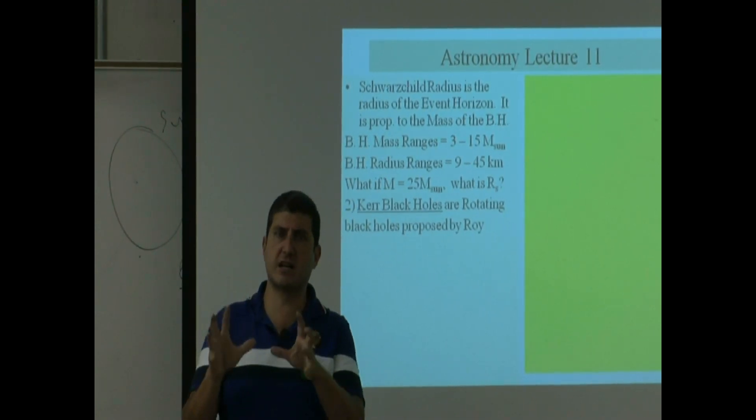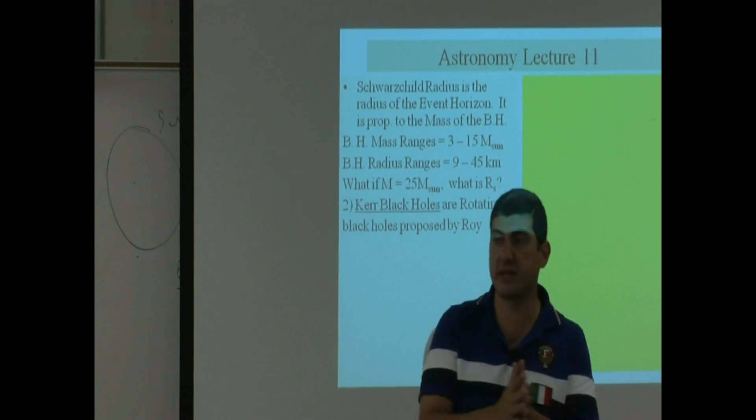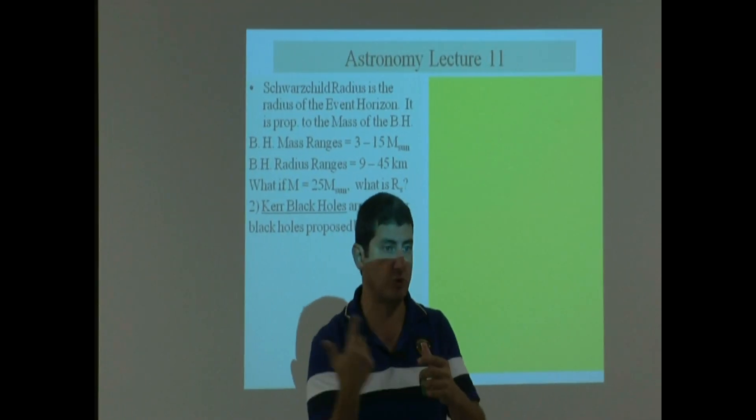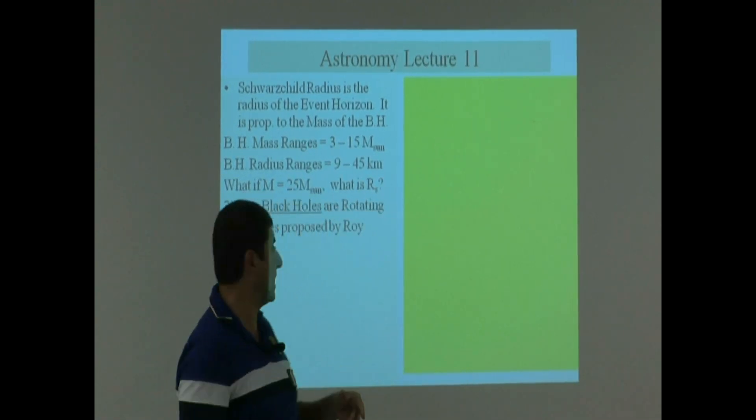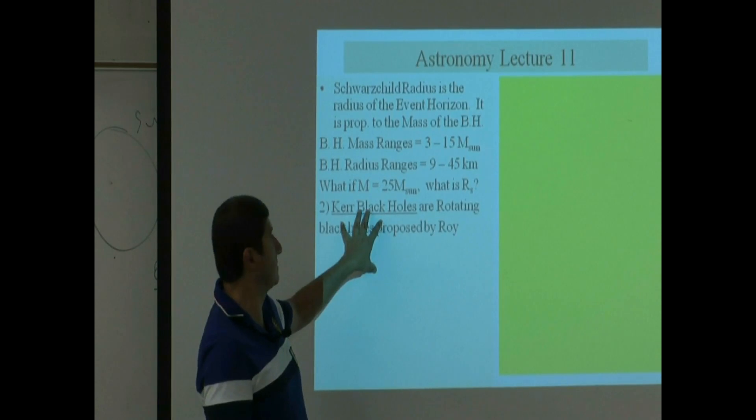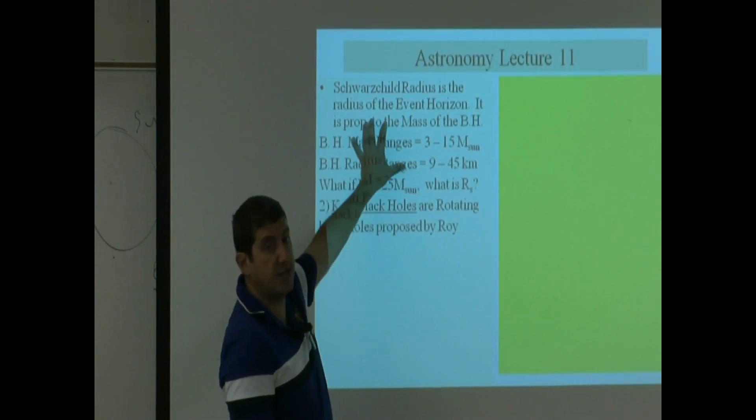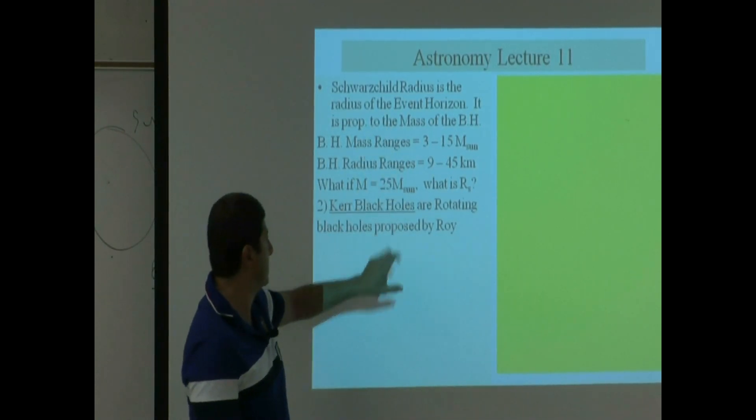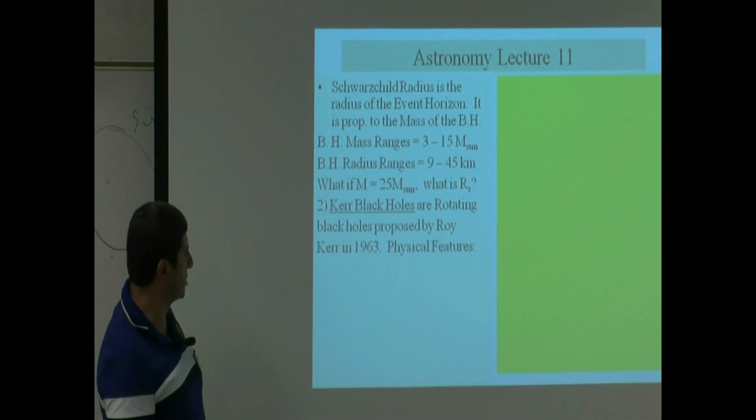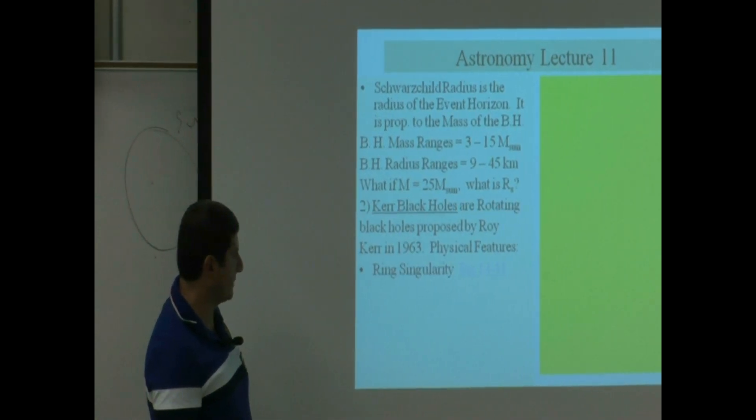Just like we expect a lot of neutron stars to rotate and become pulsars, we would expect a lot of black holes to not be stationary. We would expect them to rotate. So it's very common that we would expect this kind of black hole, probably even more common than the stationary black hole. This is known as curved black hole. The rotating black holes proposed by Roy Kerr in 1963.